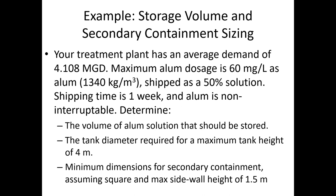Step three: find the volume needed based on the density of 1,340 kg/m³. Everything up to now has been on a mass basis; this step turns it into a volume basis. Once we've got the volume needed figured out, we'll talk through tank diameter requirements and containment dimensions. You're welcome to skip ahead, and flag me down if you want to check your answer against the solution.